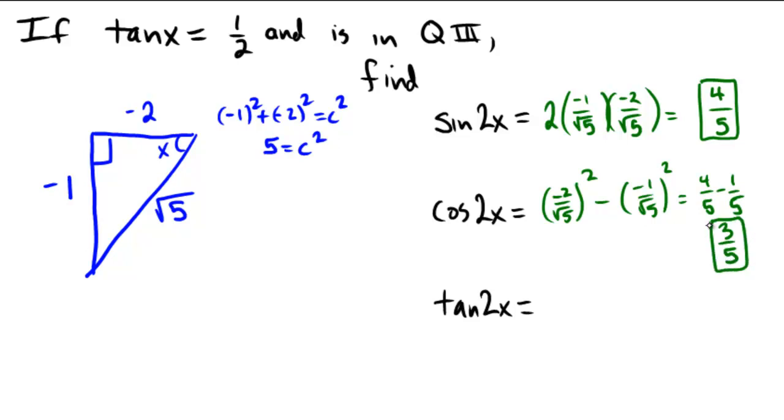And then finally, for the tangent, we'll just do the ratio of the numerators here, the sine over the cosine. And so the tangent of 2x will simply be 4 over 3.